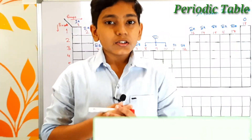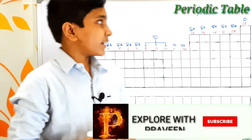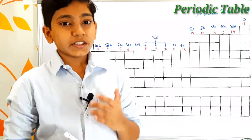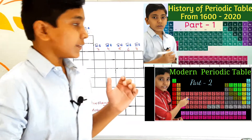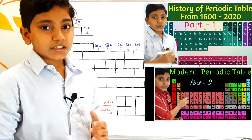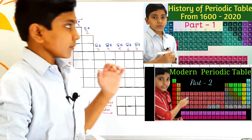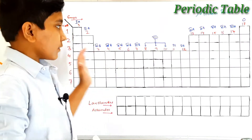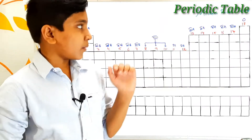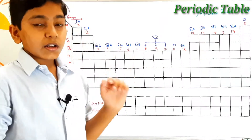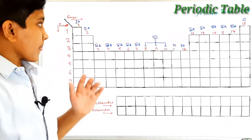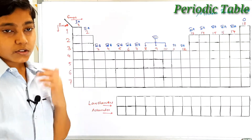Hi, this is Praveen. Let us continue our discussion on chemistry. Previously we have learned about the history of the periodic table and also we have looked at the first 20 elements of the modern periodic table. Now let us discuss about the complete modern periodic table, covering all the elements. But before going to that, we have to recall few important ones like the periods and groups.